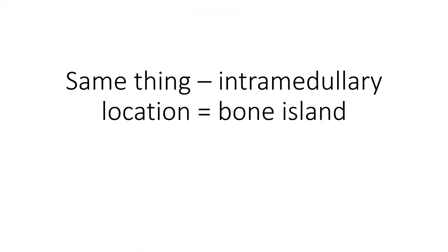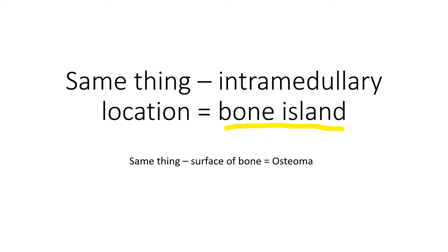Here's another very key point. If you see the same histology within the bone — within the medullary cavity — that lesion is referred to as a bone island. The same histology on the surface of the bone, as we discussed, is referred to as an osteoma. So they are histologically identical, but we give them two different names based on location.